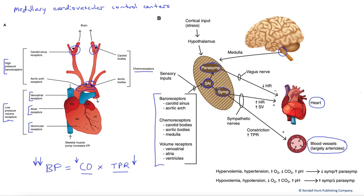If blood pressure were too low, or if blood chemistry indicated we were hypoxic, we would want more sympathetic output. If we're at rest and everything's fine, we would want more parasympathetic output. The parasympathetic output travels through the vagus nerve, innervating only the SA node in the atrium of the heart, causing a decrease in heart rate. Cardiac output is determined by heart rate times stroke volume, so that decrease in heart rate decreases cardiac output, which decreases blood pressure — keeping blood pressure lower when we are inactive and at rest.